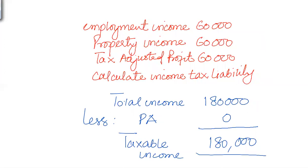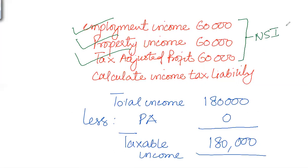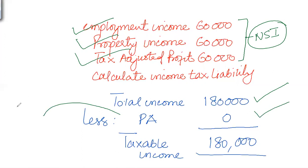Another example. We have employment income of £60,000 — non-saving income — property income £60,000, and tax-adjusted trading profit £60,000. All are non-saving income combined together, giving a total income of £180,000. The personal allowance is zero because if adjusted net income is greater than or equal to £125,000, personal allowance becomes zero.